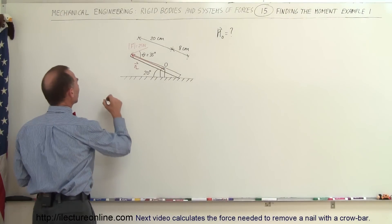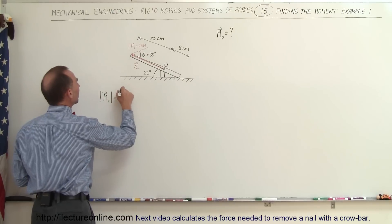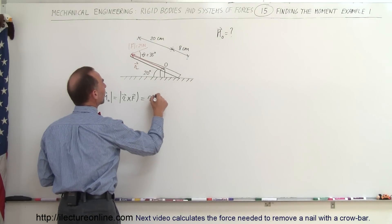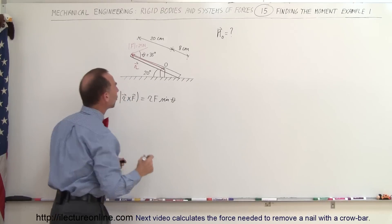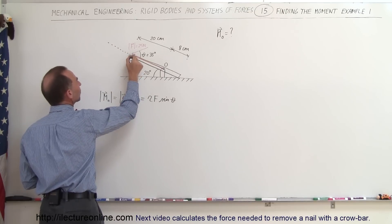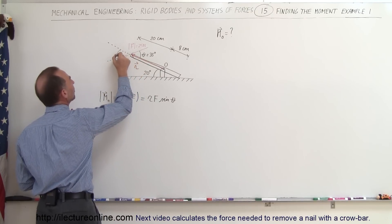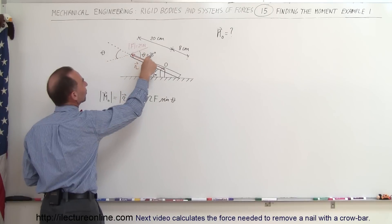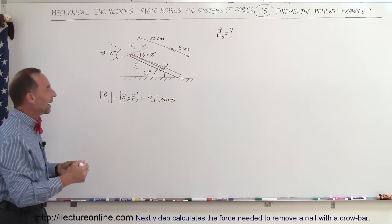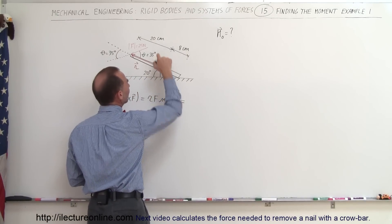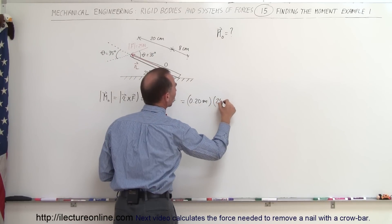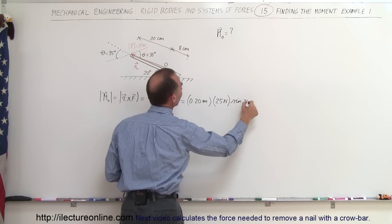One way to find the magnitude is as follows. The magnitude of the moment equals the magnitude of R cross F, which equals the magnitude of R times the magnitude of F times the sine of the angle between the two. The angle between the position vector and the force is theta. Notice this angle is the same on either side, so it equals 35 degrees. To find the magnitude, we multiply R = 20 centimeters (0.20 meters) times the force of 25 newtons times the sine of 35 degrees.